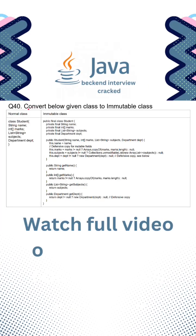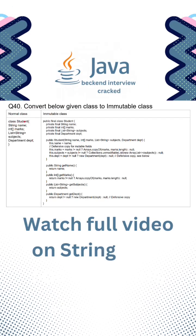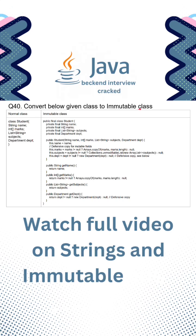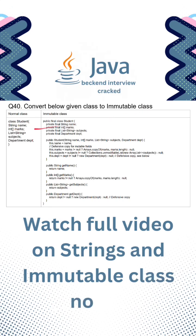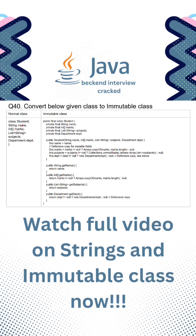A similar question can be asked: given a class, we have to convert it to an immutable class. This is a normal class having a name attribute, an integer array of marks, a list of strings storing subjects per user, and a department class reference.